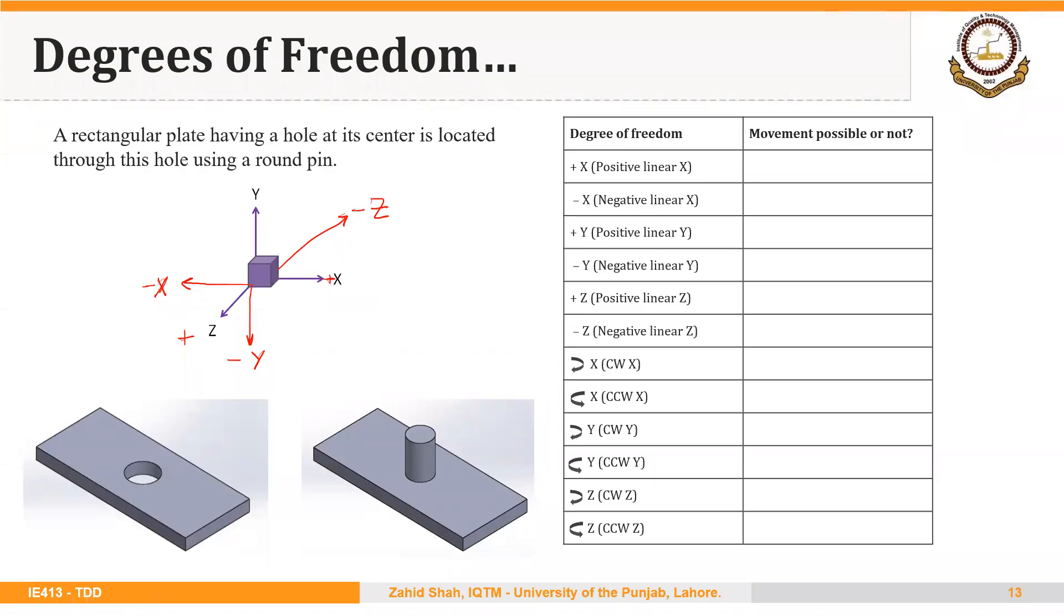Welcome back. Let's take another example of restricting degrees of freedom in jigs and fixtures. On the left side, we have our workpiece that has a hole at its center.